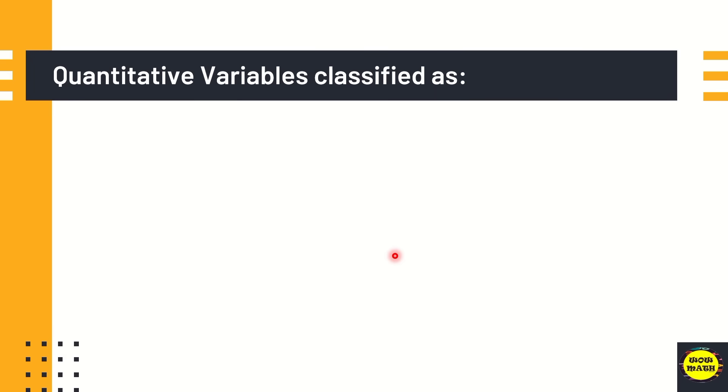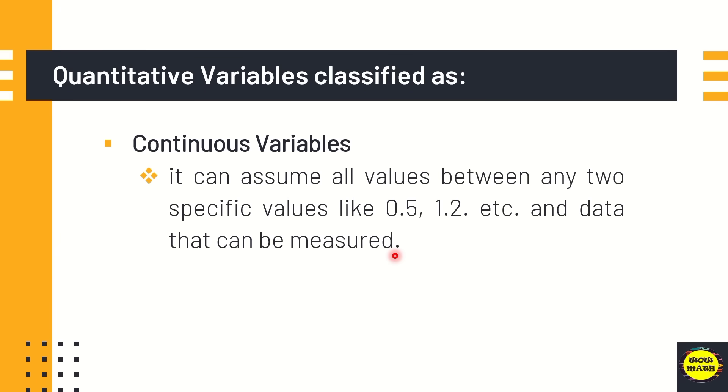The other quantitative variable is the continuous variable. When you say continuous variables, it can assume all values between any two specific values like 0.5, 1.2, and etc. And data can be measured. For example, weight, height, body temperature. So to make it easier to remember, if you're confused between discrete and continuous, discrete is countable. Continuous, it is necessary to have a decimal.